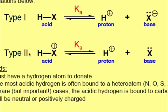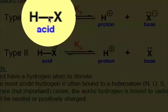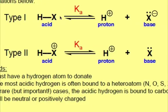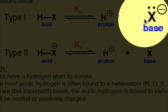The type 1 acid has a hydrogen attached to some atom X, and that hydrogen gets removed, leaving us with a negatively charged X- as the conjugate base.